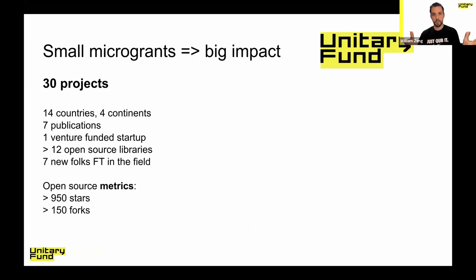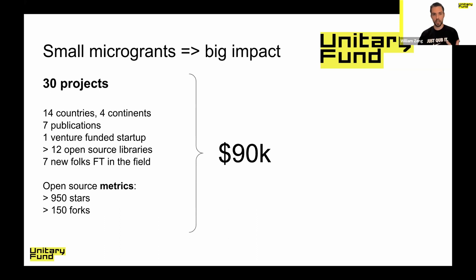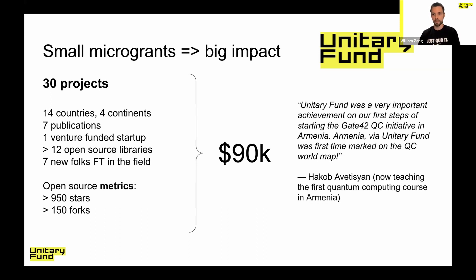The small microgrant program — $4K — does it matter when people are raising $200–300 million for their quantum startups? Well, it does. We've funded 30 projects across 14 countries, seven published publications, one venture-funded startup, a bunch of libraries, and new folks now working full-time in the field whose first thing in quantum computing was a Unitary Fund project. All of that was done with about $90K — less than the cost of an all-in graduate student for a single year. In Armenia, the project we funded became the first quantum computing course in Armenia, and they've since started their first institute. They couldn't afford a dilution fridge, but we helped them figure out what to work on from a software research perspective.